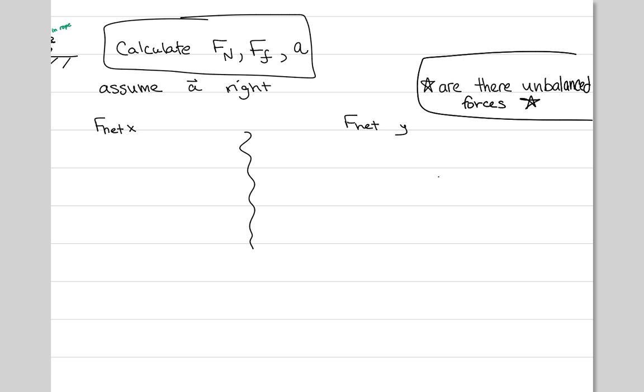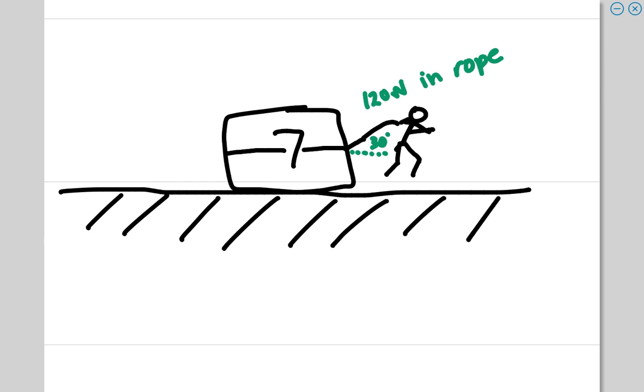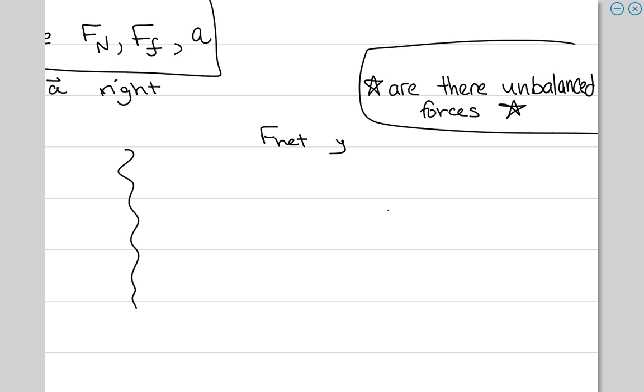So let's take a look in the Y component. Is this box accelerating up in the sky? It's accelerating to the right, but is it accelerating up? No. So that means in the Y component the forces are balanced. So that means the net force is zero. Before we do that, let's just put F net. So you have F net in the Y equals, and in the next step it's going to be zero, because it's balanced.